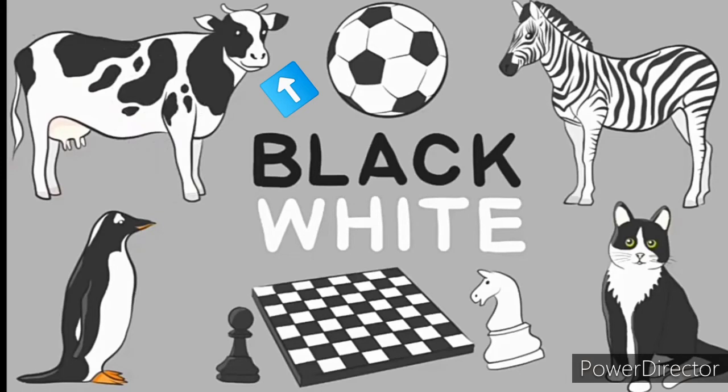Zebra is white with black stripes on his body. So, it is in black and white both the colors. Let's see some of them. Black and white cow. Black and white zebra. Black and white football. Black and white penguin. Black and white chess board. Black and white cat.